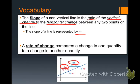A rate of change compares a change in one quantity to a change in another quantity. So slope is specifically the rate of change in horizontal and vertical change, but we can put that into the context of a word problem, for example.